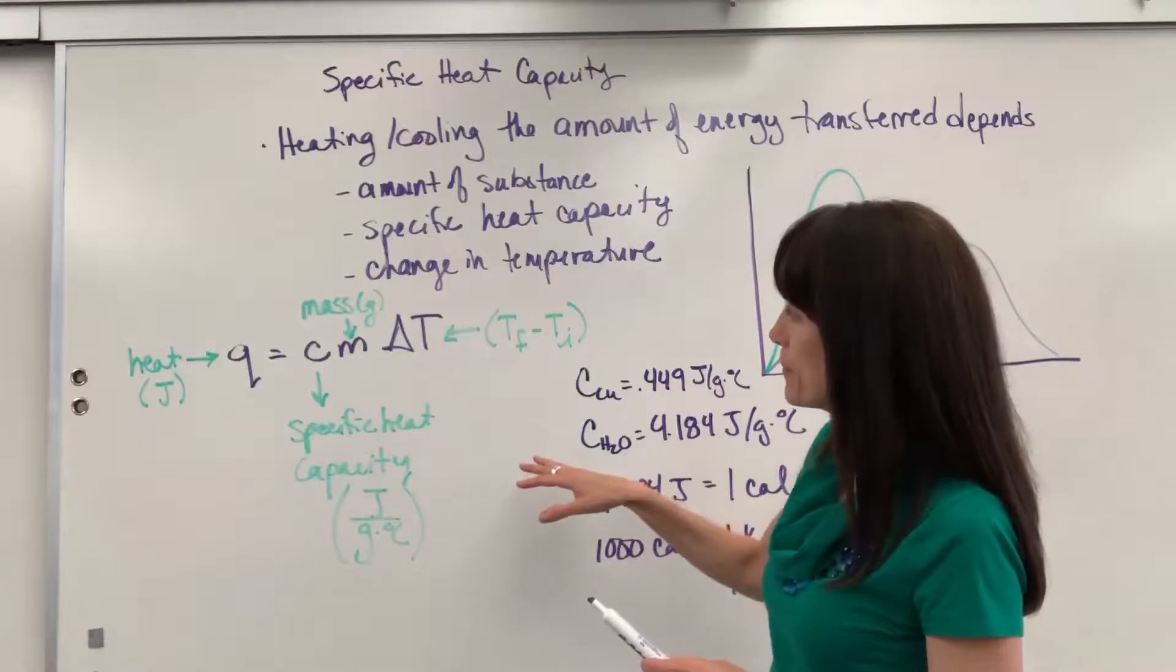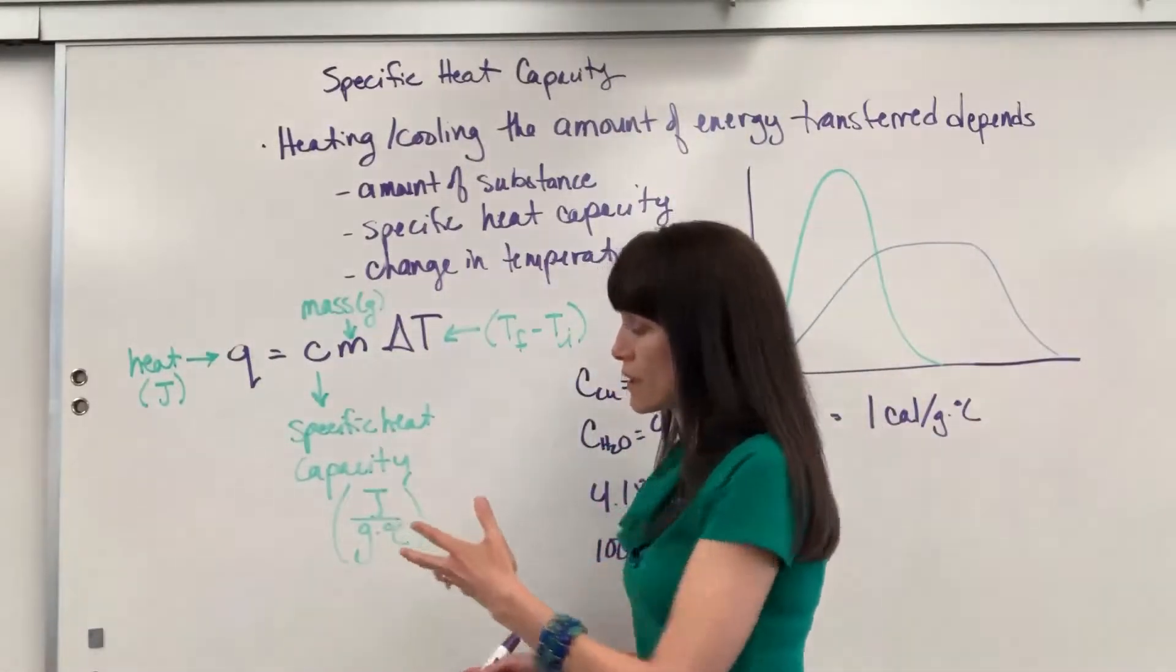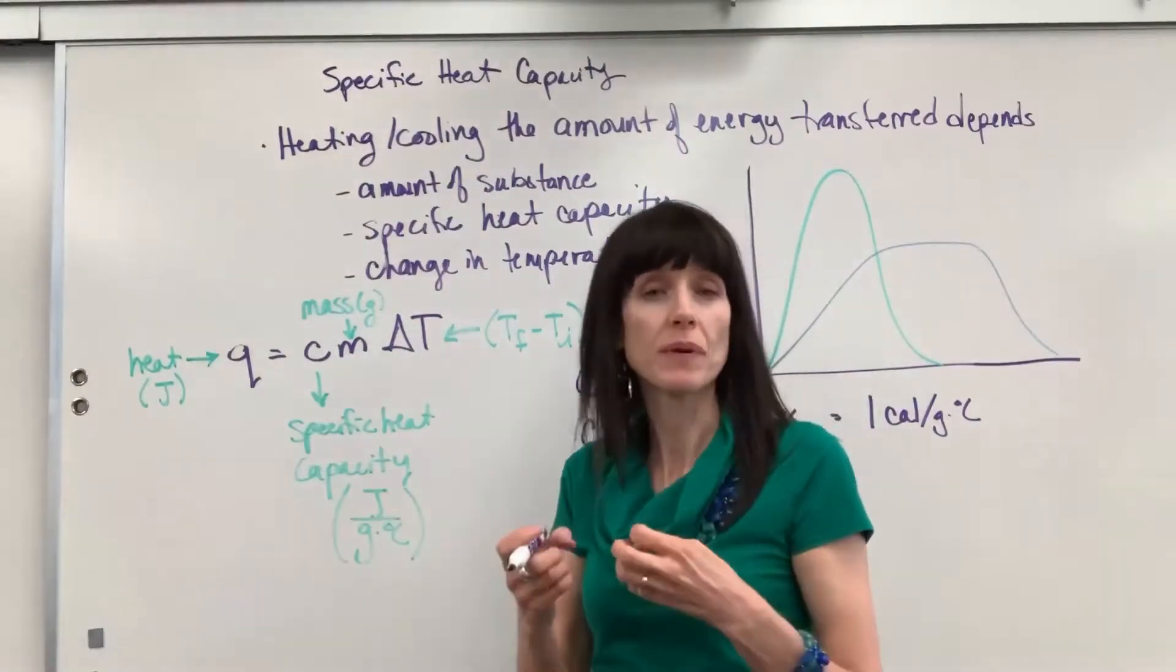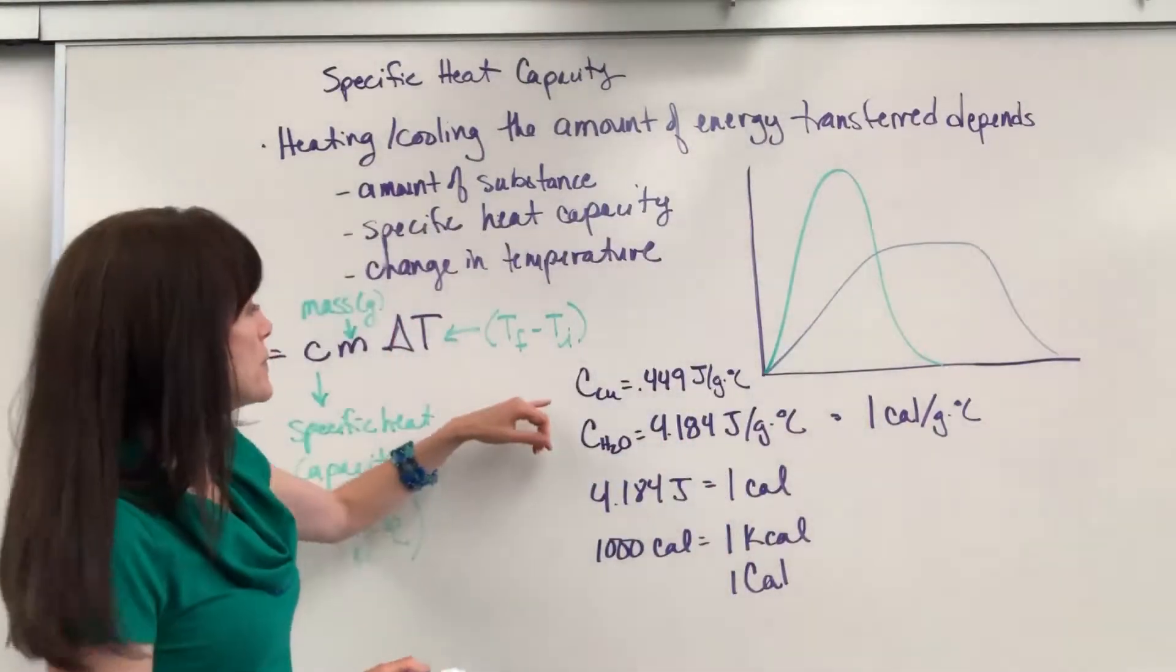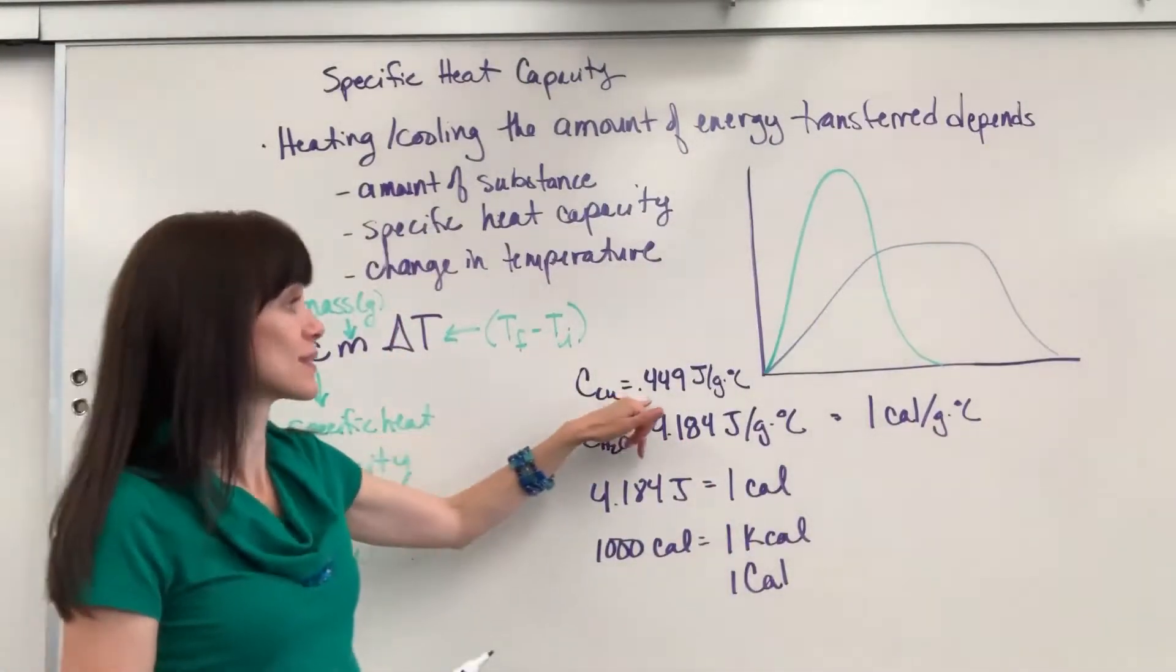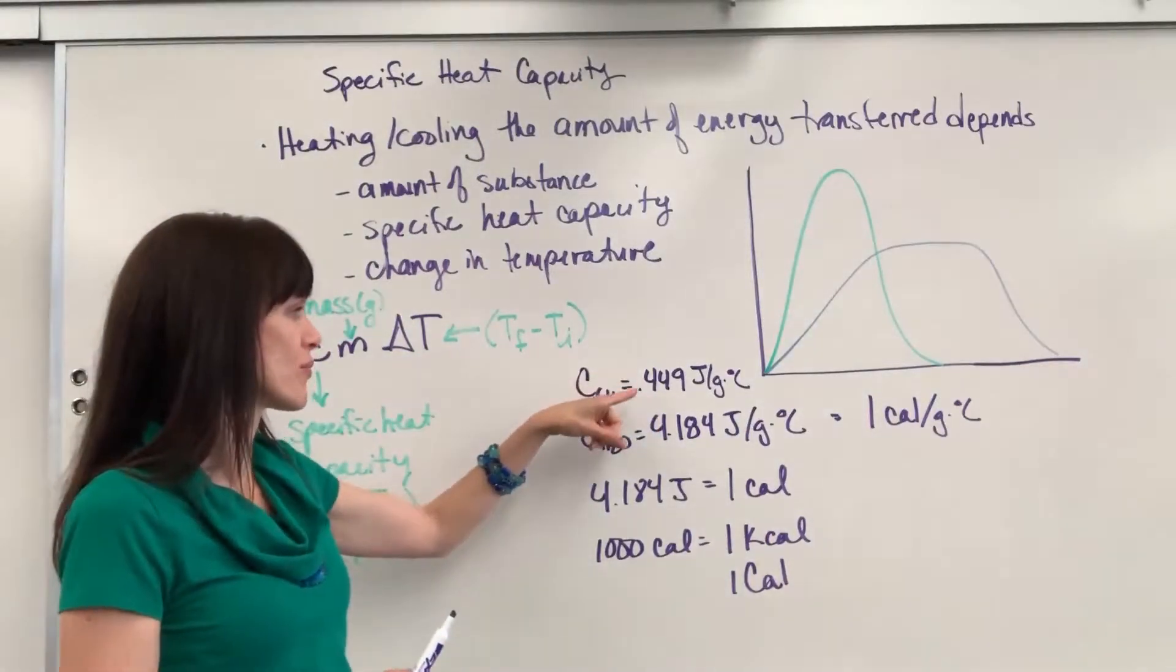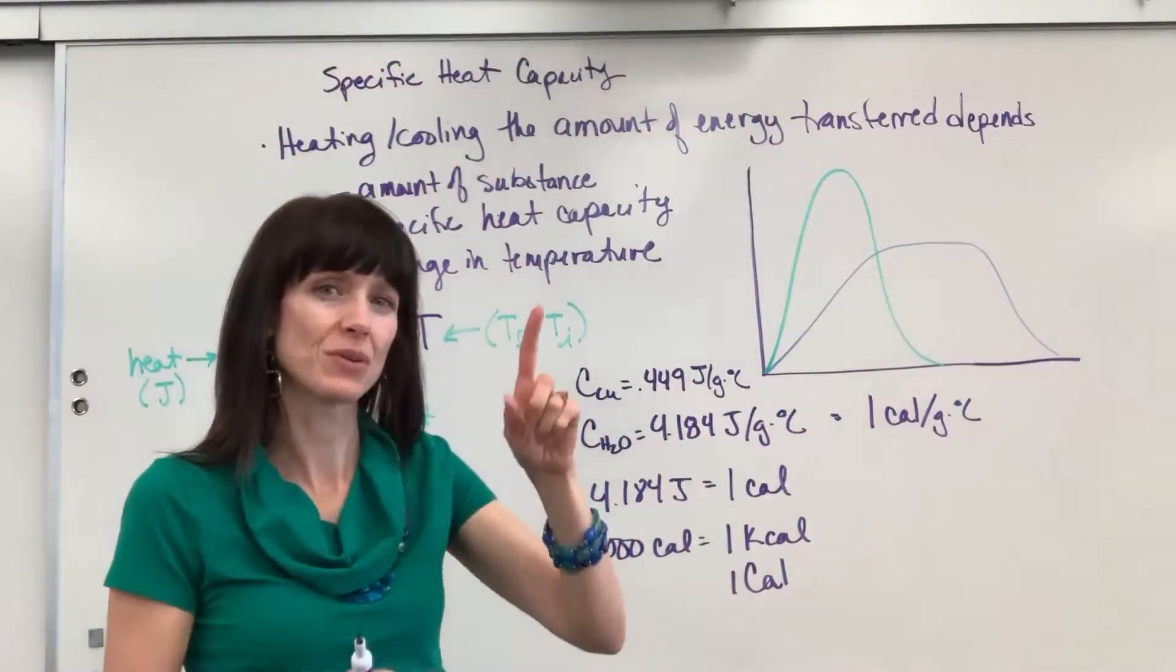Now I want to talk about specific heat. So this right here is the ability of a substance to absorb energy or to release energy. I wanted to give you two examples. Specific heat of copper is low, 0.449. You only have to put in 0.449 joules for every one gram of copper to raise it one degree C.